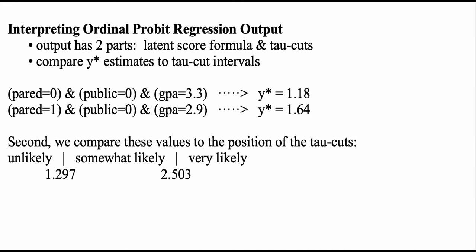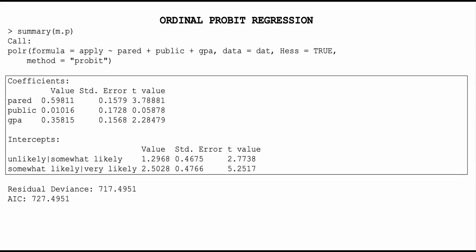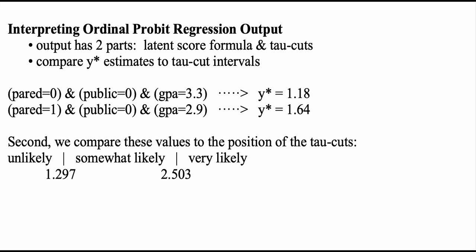The second part of the output gives the tau cut positions, listed as intercepts. The boundary between unlikely and somewhat likely is at 1.2968, and the boundary between somewhat likely and very likely is at approximately 2.503. So the separator for unlikely is at 1.297, the separator for very likely is at 2.503, and the range between those tau cuts is where someone would be classified as somewhat likely.